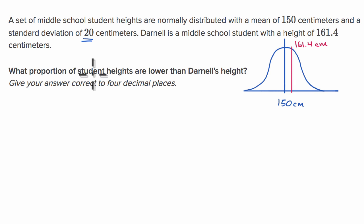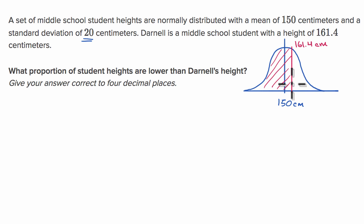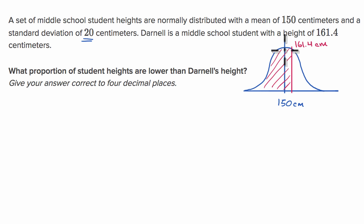We want to figure out what proportion of students' heights are lower than Darnell's height — that is, the area under the normal curve to the left of his position. To do this, we need to think about how many standard deviations above the mean Darnell is. We can do that because we know the standard deviation and the difference between Darnell's height and the mean. Once we know that, that's our z-score, and we can look at a z-table to find what proportion is less than that value.